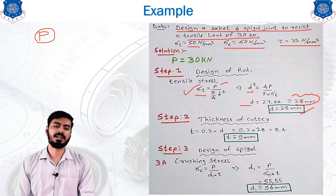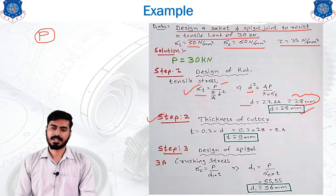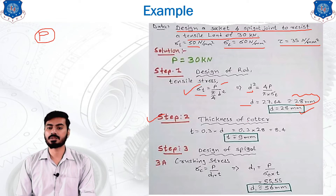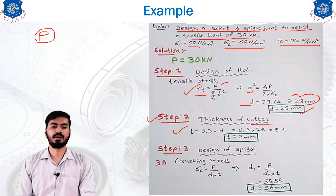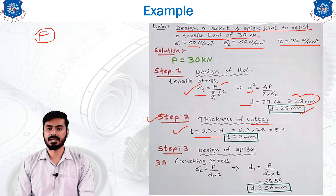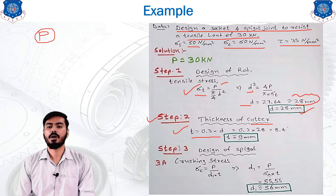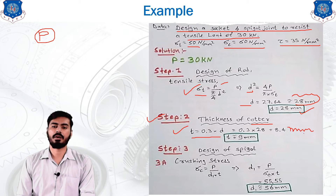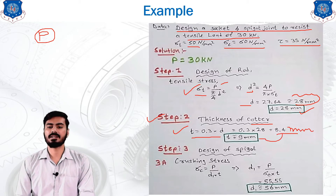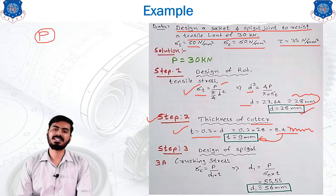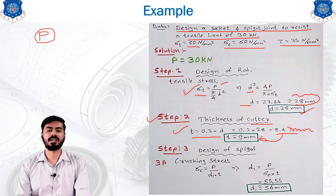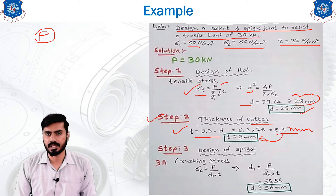Step 2 is the thickness of the cotter. The cotter thickness is determined by the assumption t = 0.3 × d. Calculating: t = 0.3 × 28 = 8.4 mm, which is rounded up to 9 mm. So the thickness of the cotter t = 9 mm. This is an assumption, and subsequent dimensions will be calculated using it.